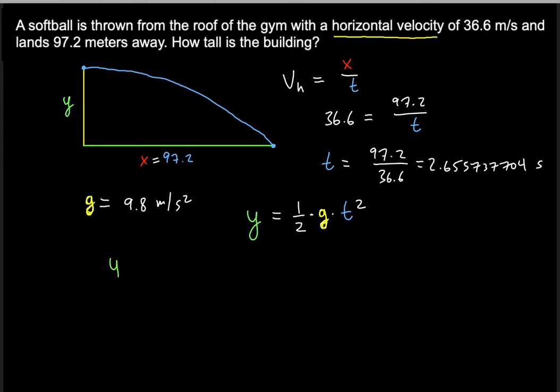So now we can directly solve for y because we know the components, the g and t squared. So one half times 9.8 meters per second squared times this whole thing, 2.655737704 second squared. And notice that when you square these, the second unit will also be squared.